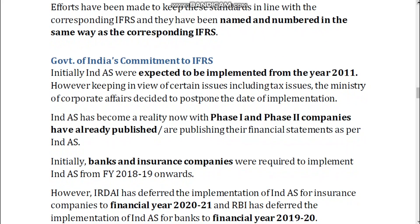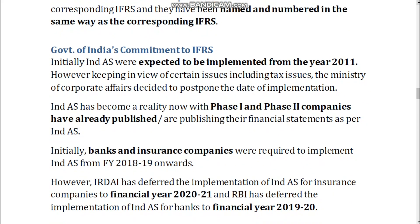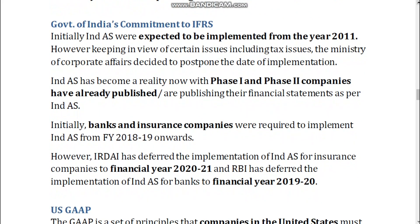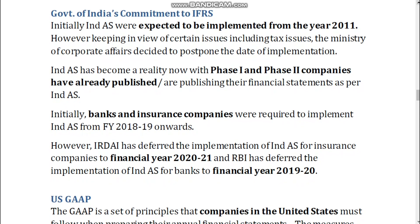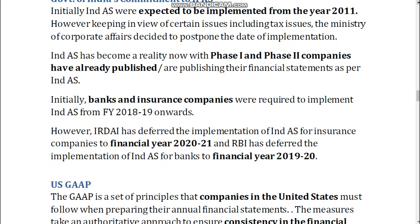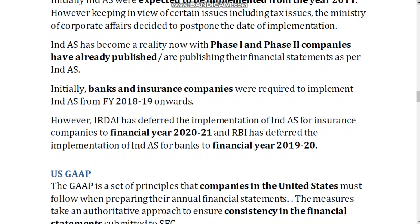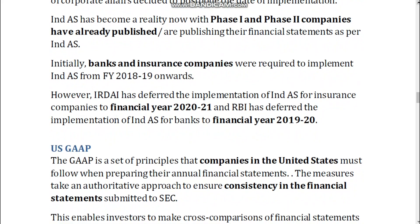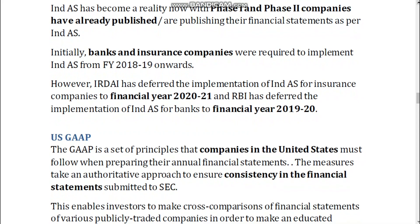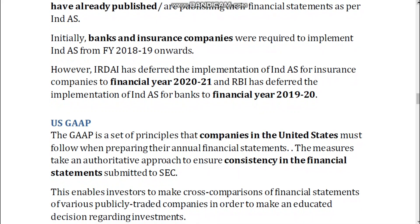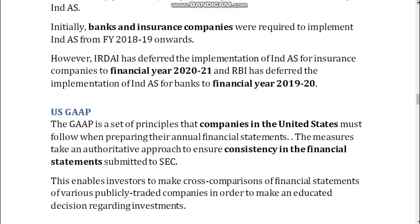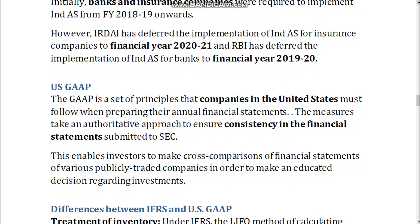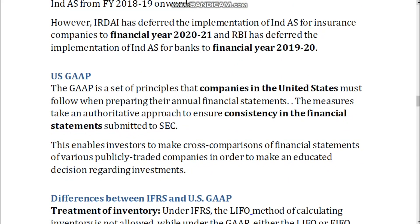Government of India's commitment to IFRS. Initially, Ind AS were expected to be implemented from 2011. However, keeping in view certain issues including tax issues, the Ministry of Corporate Affairs decided to postpone the date of implementation. Ind AS has become a reality now, with Phase I and Phase II companies already publishing their financial statements as per Ind AS. Initially, banks and insurance companies were required to implement Ind AS from FY 2018-19. However, IRDA deferred implementation for insurance companies to FY 2020-21, and RBI deferred implementation for banks to FY 2019-20.